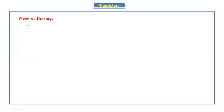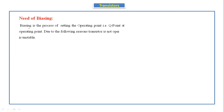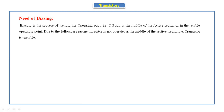Hello everyone, today's topic is the need of biasing. In the previous class we discussed about the DC load line analysis. Today we will discuss what is the need of biasing. Biasing is a process of setting the operating point, that is the Q point, at the middle of the active region or in the stable operating point.